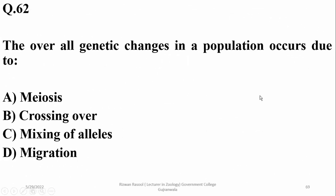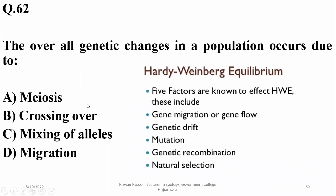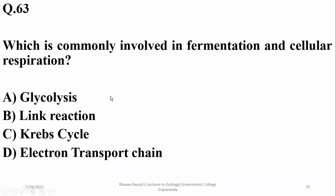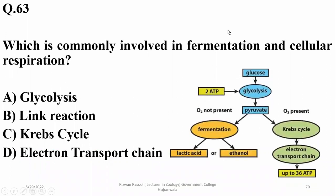Question 62: overall genetic changes in a population occur due to meiosis and crossing over. Hardy-Weinberg equilibrium will not be disturbed under normal conditions, but the factor responsible for disturbing it is migration. Other contributing factors include genetic drift, mutation, non-random mating, selective mating, genetic combinations, and natural selection. The right option is migration, delta.